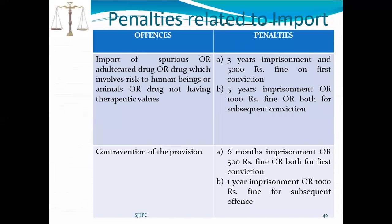Regarding penalties: if any conviction is found during the import procedure — such as importing a spurious, adulterated, or misbranded drug, or any drug which adversely affects human beings or animals, or does not have proper therapeutic value — then there is three years imprisonment with a 5,000 rupees fine on the first conviction. If the same illegal conviction is repeated, then further five years imprisonment or 1,000 rupees fine or both for subsequent conviction. Contravention of provisions results in six months imprisonment or 500 rupees fine or both for the first conviction, or one year imprisonment or 1,000 rupees fine or both for subsequent conviction.